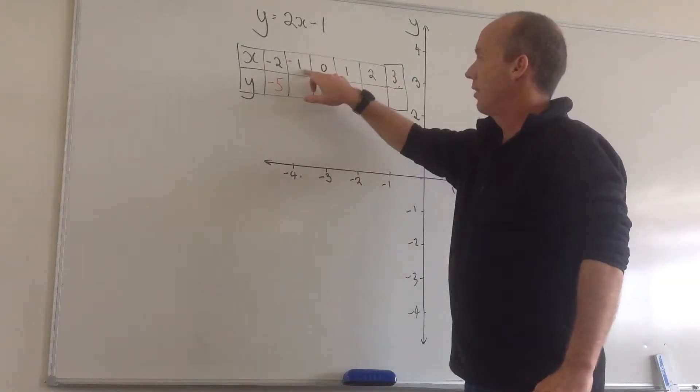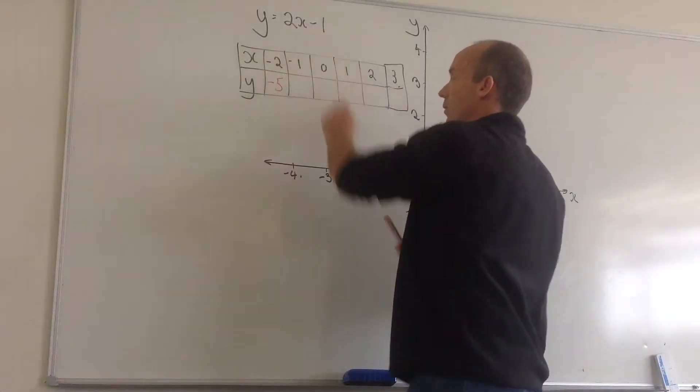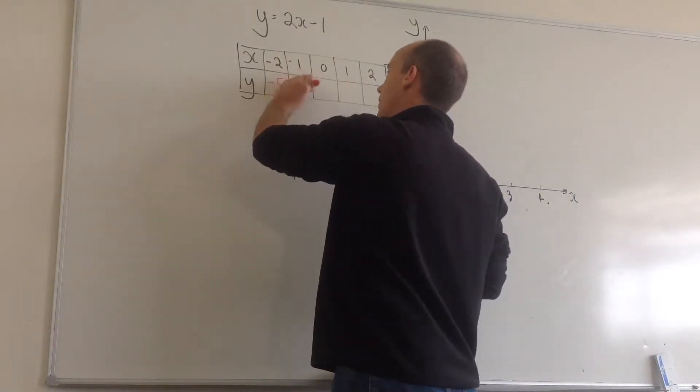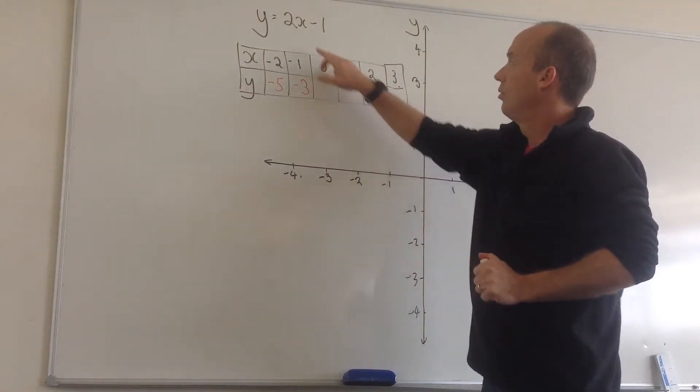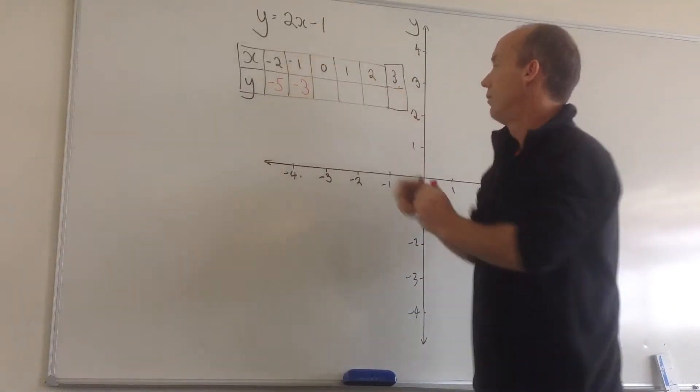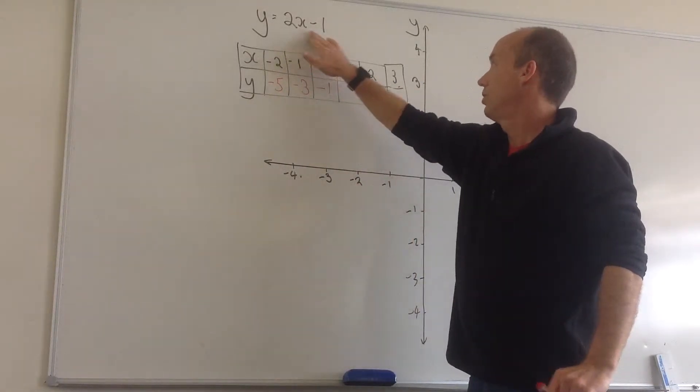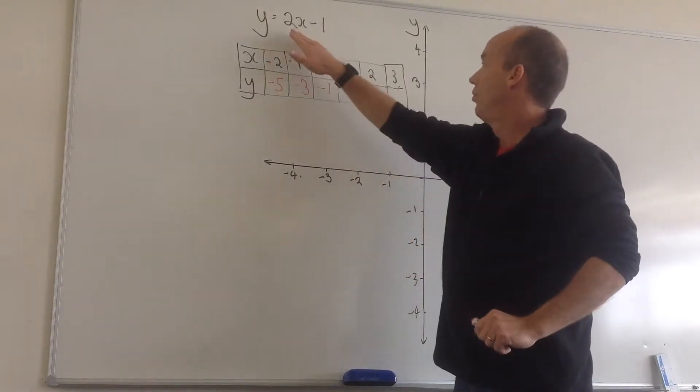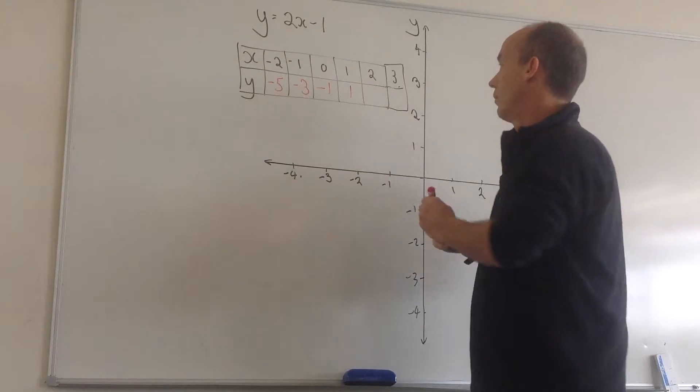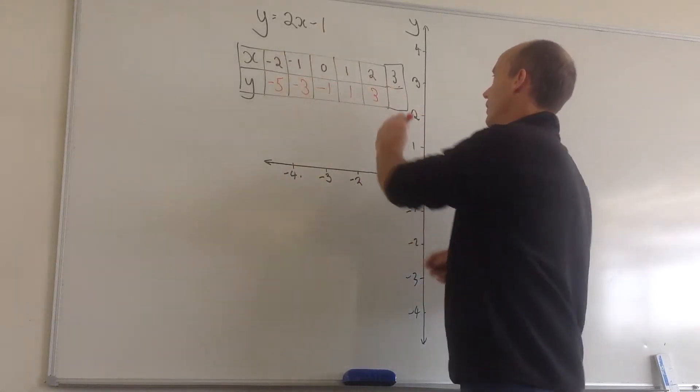I'll put in my next x value. My next x value is minus 1. So I've got 2 times minus 1 is minus 2. Take away 1 is minus 3. And I'll keep doing that. 2 times 0 is 0. Take away 1 is minus 1. 2 times 1 is 2. Take away 1 is 1. 2 times 2 is 4. Take away 1 is 3. And 2 times 3 is 6. Take away 1 is 5.